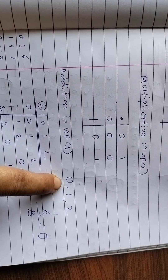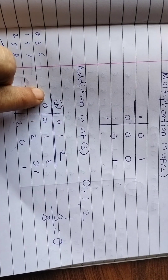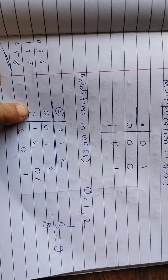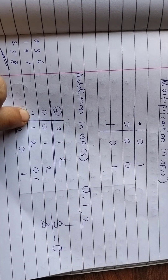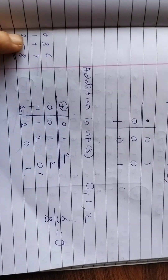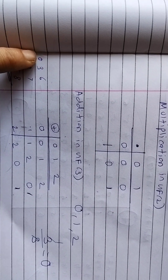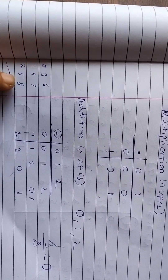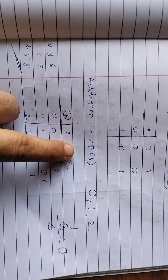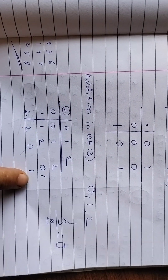Now let us see addition in GF(3). There are three elements: 0, 1, and 2. The addition table: 0+0=0, 0+1=1, 0+2=2, 1+0=1, 1+1=2, 1+2=3 — but 3 is not in GF(3), so we use the replacement table. Write 0, 1, 2, then 3, 4, 5, 6, 7, 8. Here 3 means 0, 6 means 0; 4 means 1, 7 means 1; 5 means 2, 8 means 2.